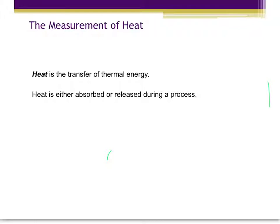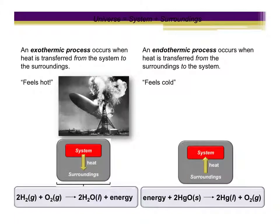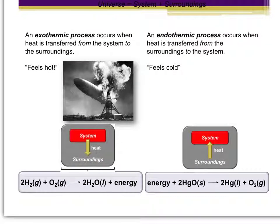Heat is a transfer of thermal energy — it is either absorbed or released during the process. An exothermic process happens when heat is transferred from the system to the surroundings. So if you were touching a container that has a reaction taking place inside that is an exothermic reaction, the container would feel hot, and the reaction would give off heat to the surroundings.